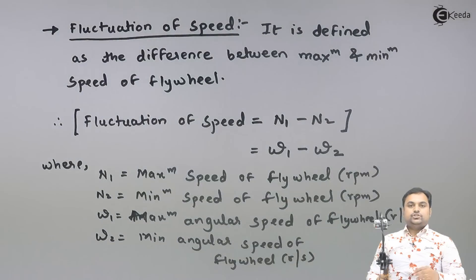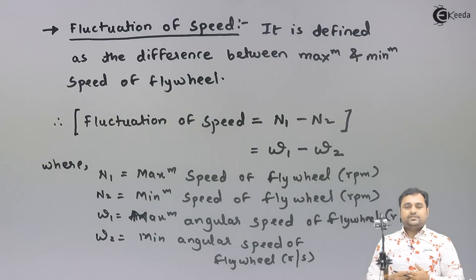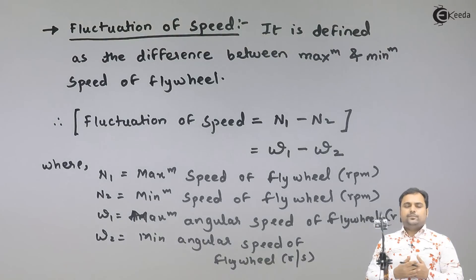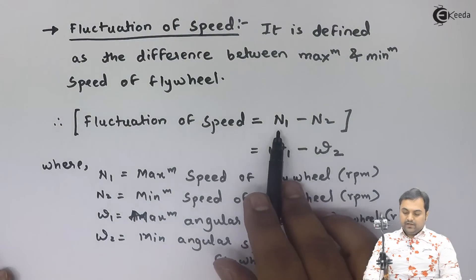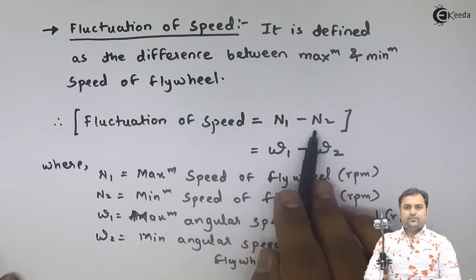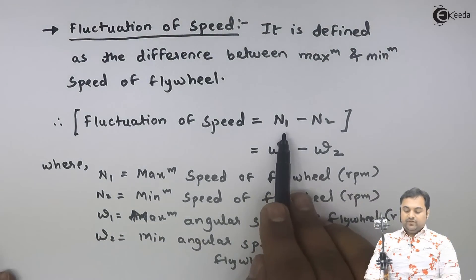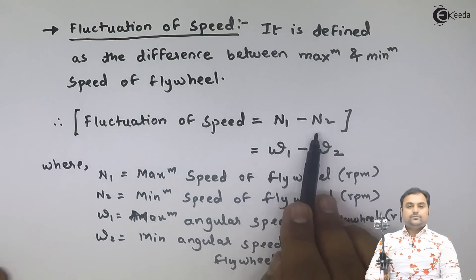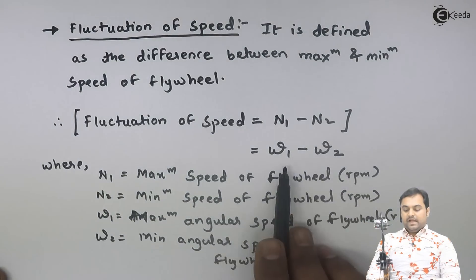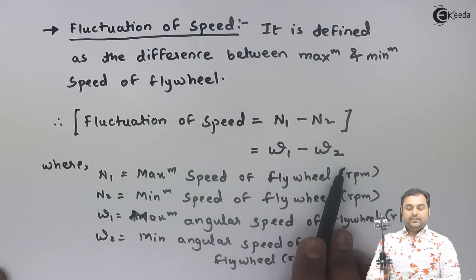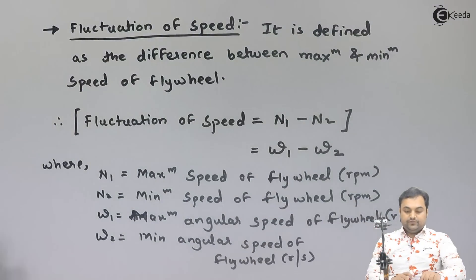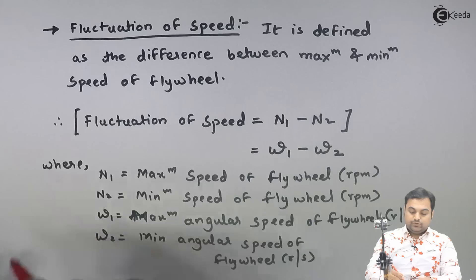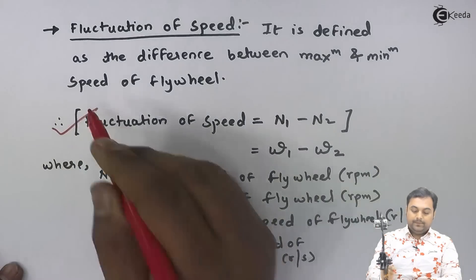In short, fluctuation of speed is nothing but the range of speed — it gives the difference between maximum speed and minimum speed, both in terms of RPM and angular speed. So that was the definition of fluctuation of speed.